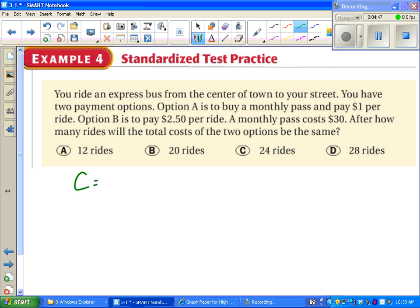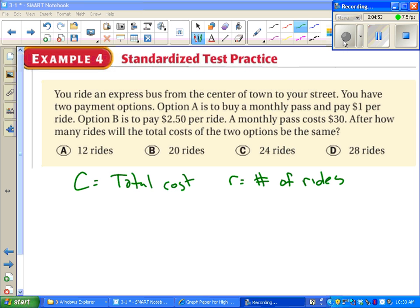We should start by identifying some variables. We've got a total cost. And we've got the number of rides that you take. We've got to set up a couple of equations.